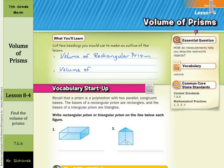And our vocabulary startup. Recall that a prism is a polyhedron with two parallel congruent bases. The bases of a rectangular prism are rectangles, and the bases of a triangular prism are triangles.